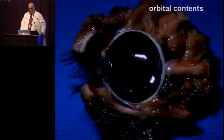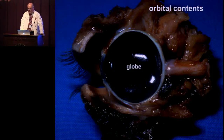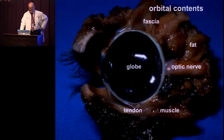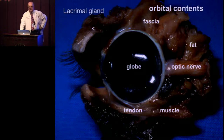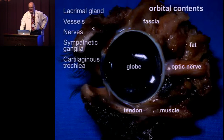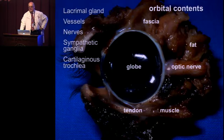The orbital contents include the eyeball, a tract of the central nervous system, the optic nerve, fat, muscle, tendon, fascia, lacrimal gland, vessels, nerves, sympathetic ganglia, and the cartilaginous trochlea. All of these can, in rare situations, give rise to neoplasms.